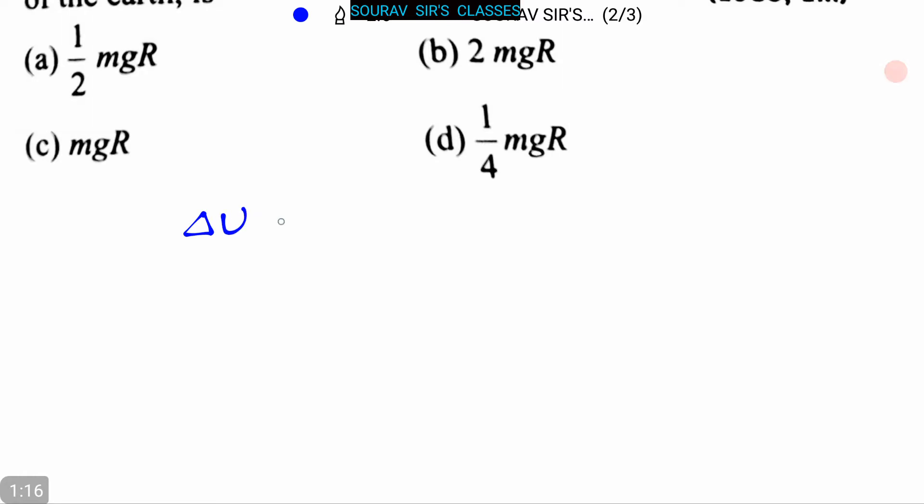We can write ΔU equals mgh divided by 1 plus h by R. Now from this, it is given that h equals R. This was given in the question. So now putting this value, we can write it as ΔU equals mgR